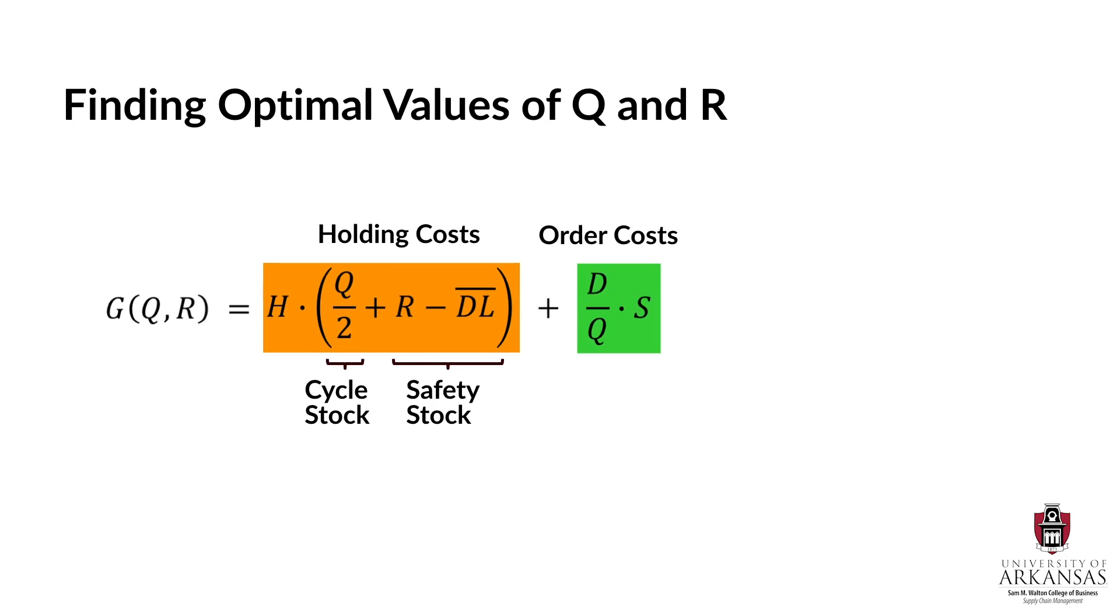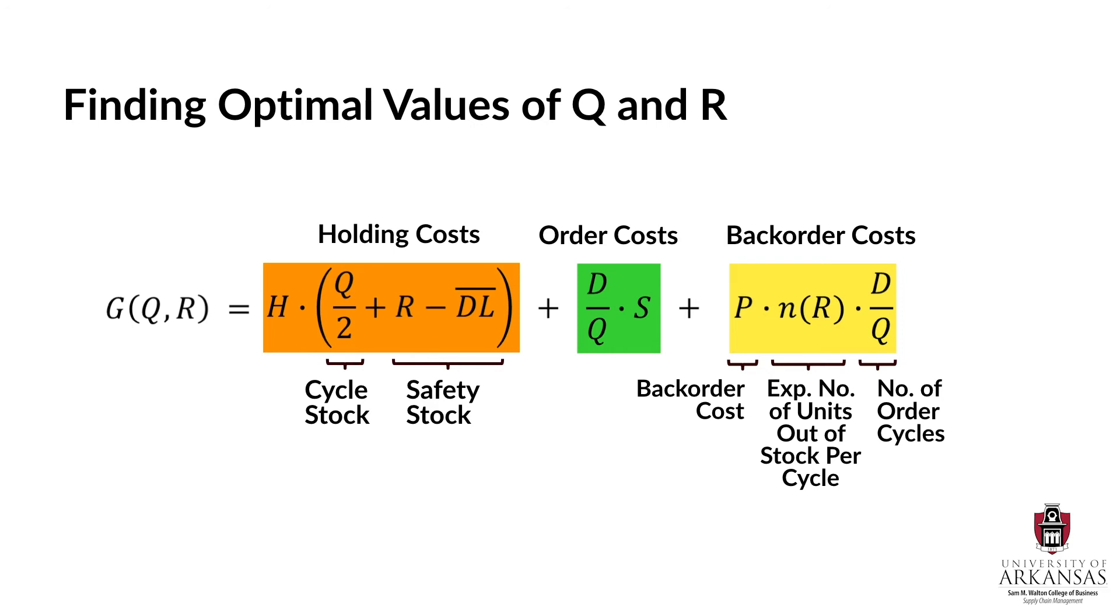Annual order placement costs, in turn, are calculated just as in the basic EOQ model. It is the number of order placements, annual demand D divided by the order quantity Q, multiplied by the order placement cost S. Last but not least, let's take a look at annual backorder costs. P is the backorder cost per unit and N of R is the stock out quantity per order cycle. The product of P and N of R then gives us the backorder cost per cycle. To get an annual backorder cost figure, we then multiply the backorder cost per cycle by the number of cycles per year, D over Q.